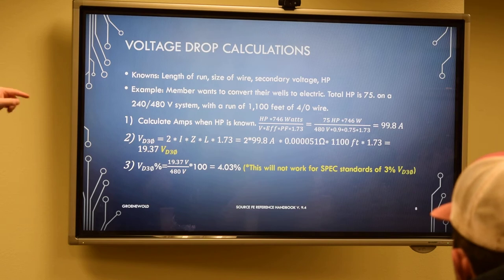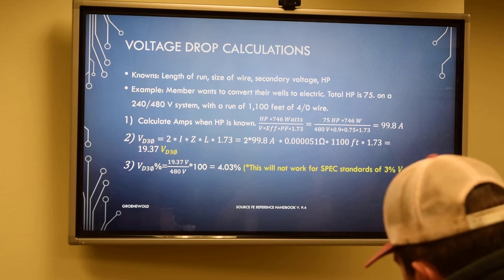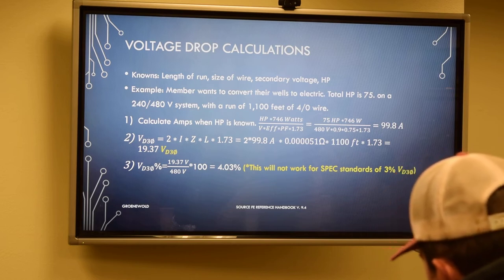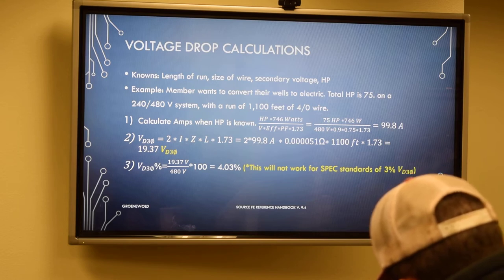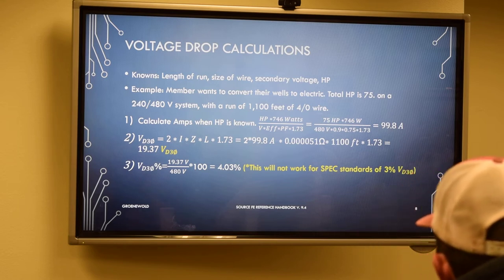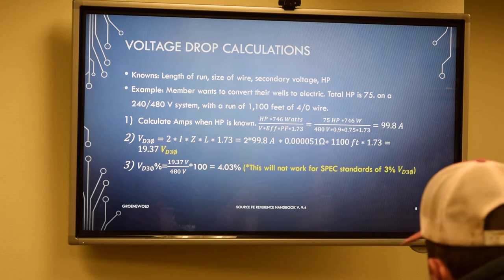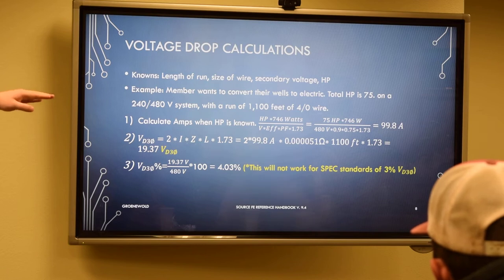You'll divide it by the voltage, which is 480. The efficiency of a motor, we represent that as just 90%, because motors these days are very efficient. When we model it in our Windmill software, we use a power factor of 75 for anything irrigation. The 1.73 comes into play later on as well. I'll touch more on that. That is just the square root three for a three-phase system. So when you do that equation right there, you'll get your 99.8 amps with a known horsepower.